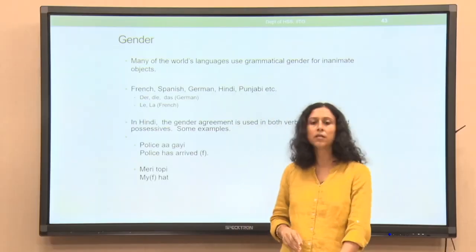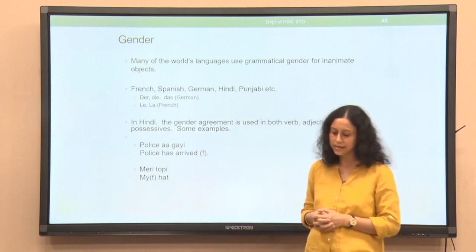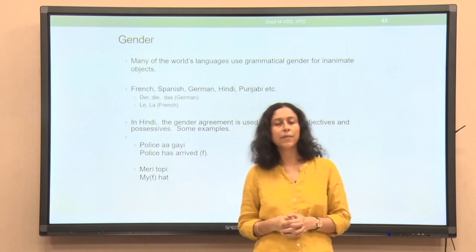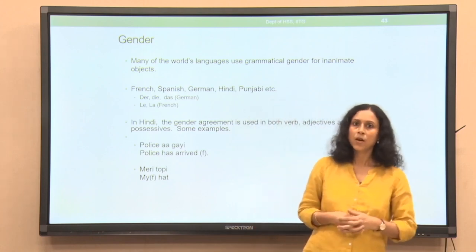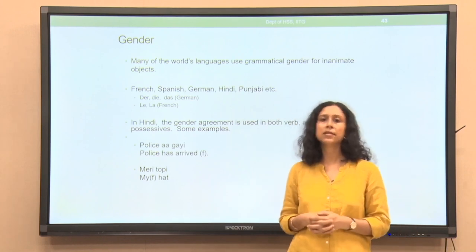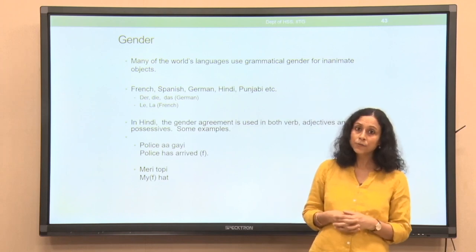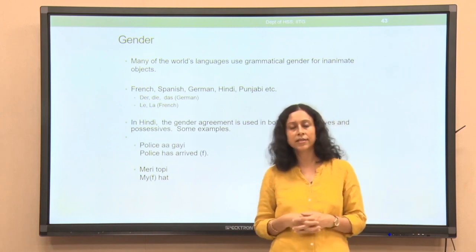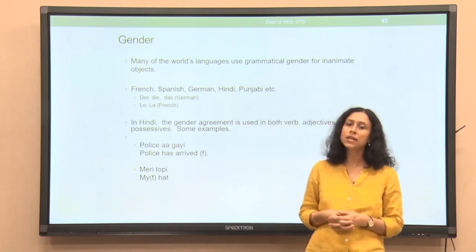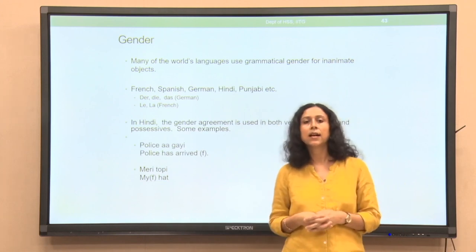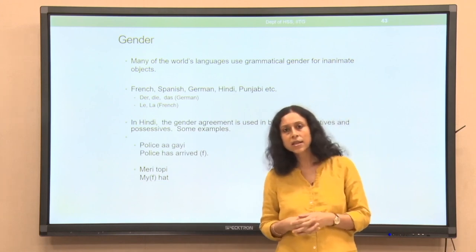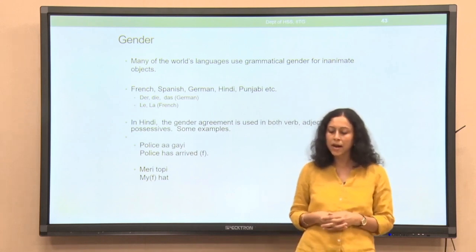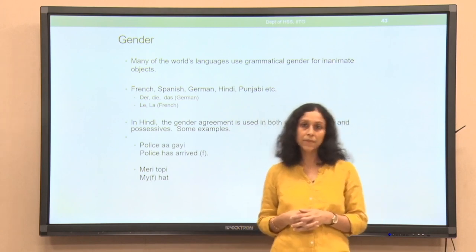The first grammatical aspect we will discuss is grammatical gender. Languages differ in terms of whether they have grammatical gender. Some languages in the world assign gender to inanimate objects. Of course, animate objects have biological gender, but in some languages, inanimate objects — things that are not biological entities — also have a gender assigned to them. Languages of this type include French, Spanish, German, Hindi, and Punjabi. This means objects like a chair, a table, a fan, or a house will each be either feminine or masculine.